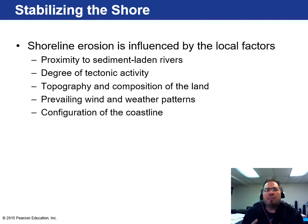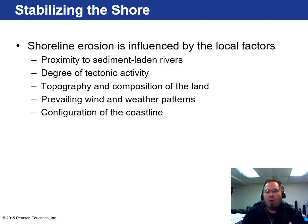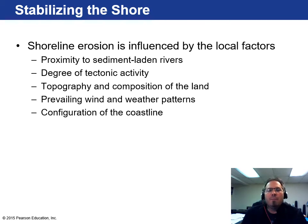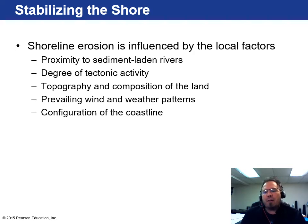Shoreline erosion is influenced by many factors: proximity to sediment-laden rivers, tectonic activity, topography and land composition, prevailing wind and weather patterns, and the configuration of the coastline — whether it has natural bays, estuaries, or is straight. All of these determine how quickly or slowly a shoreline erodes, since deposition and erosion occur simultaneously.